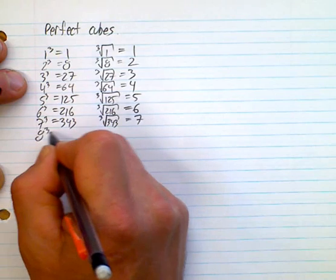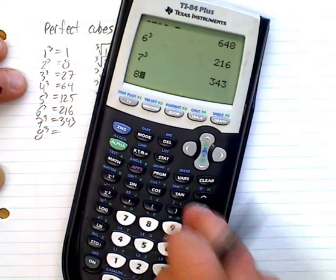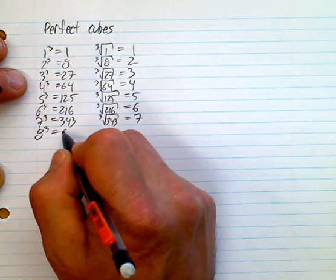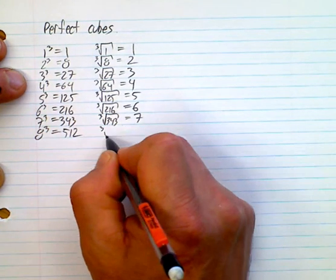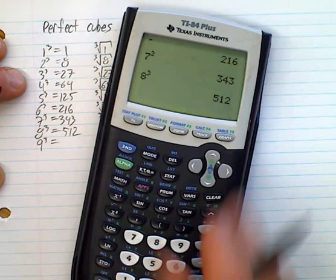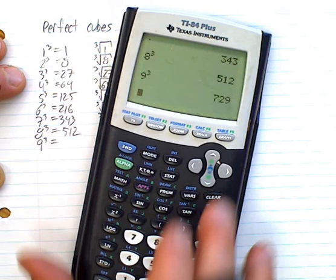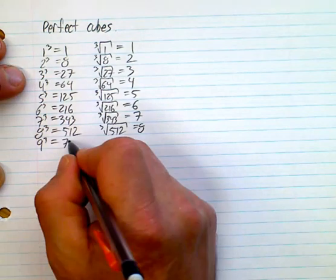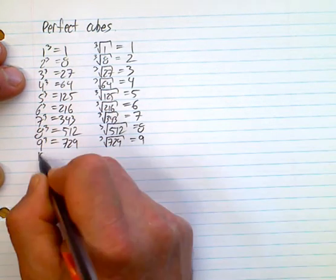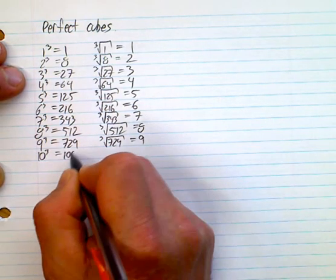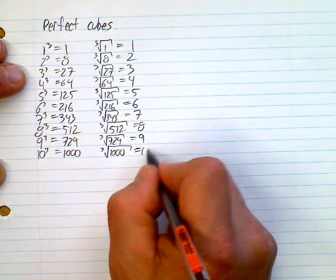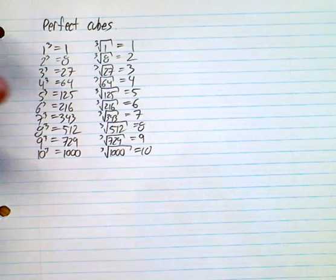8 to the power of 3 is 512, so the cube root of 512 is 8. 9 to the power of 3 is 729, so the cube root of 729 is 9. And 10 cubed — hopefully you can work that out without a calculator — it's 10 times 10 times 10, which is 1000, so the cube root of 1000 is 10.